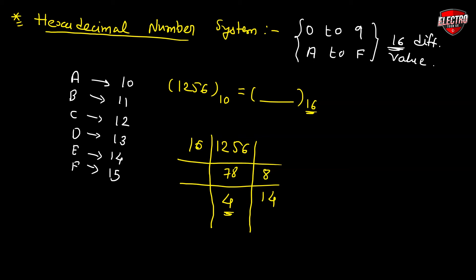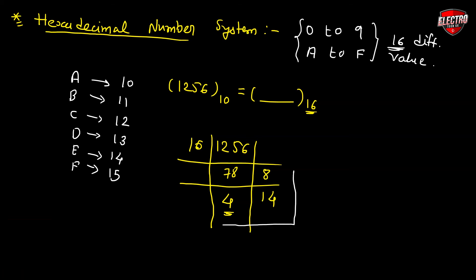Write the final answer from bottom to top. The remainder 14 indicates the value E in the hexadecimal number system. So the first bit is 4, the second bit is 14 which is equivalent to E in hexadecimal, and the last bit is 8. Therefore 4E8 in hexadecimal is equivalent to 1256 in the decimal number system.